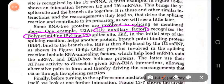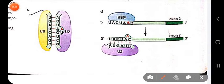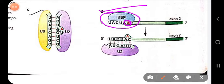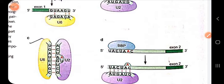U2 Auxiliary Factor binds to the polypyrimidine tract — the Py tract. Another protein called BBP (branch point binding protein) binds to the branch site initially, but later it will be replaced by U2 snRNP.